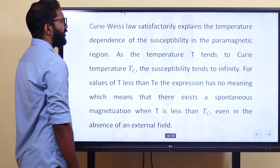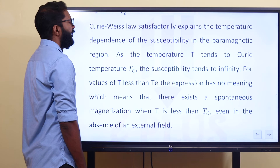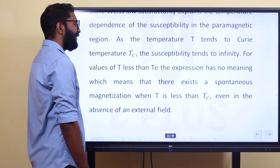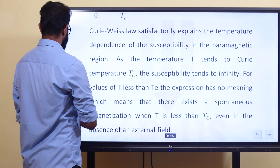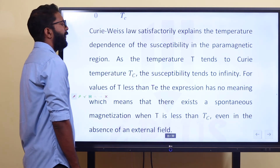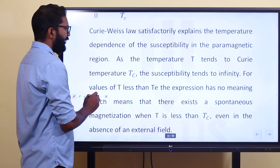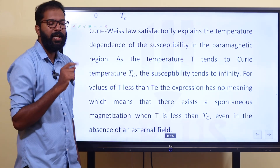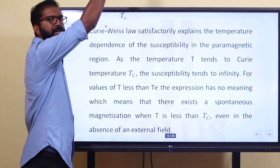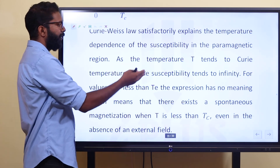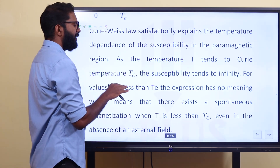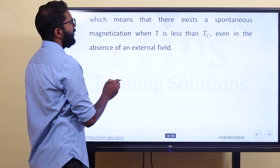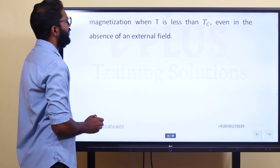Curie-Weiss law satisfactorily explains the temperature dependence of the susceptibility in the ferromagnetic region. As the temperature T tends to the Curie temperature T_c, the susceptibility tends to infinity, since C divided by (T minus T_c) diverges as T approaches T_c. For values of T less than T_c, the expression has no meaning, which means there exists a spontaneous magnetization even in the absence of an external field.